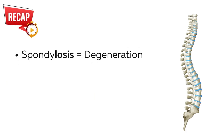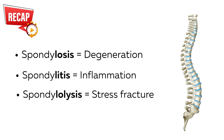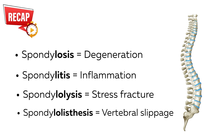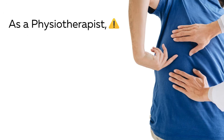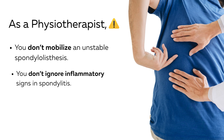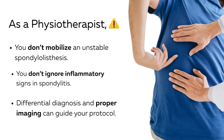Let's quickly recap. Spondylosis equals degeneration. Spondylitis equals inflammation. Spondylolysis equals stress fracture. Spondylolisthesis equals vertebral slippage. As a physiotherapist, here are some mistakes you should prevent: do not mobilize an unstable spondylolisthesis, do not ignore inflammatory signs in spondylitis, and remember that differential diagnosis and proper imaging can guide your treatment protocol.